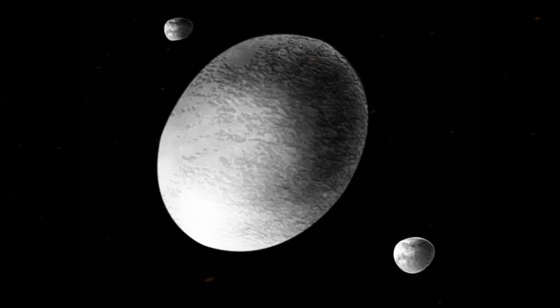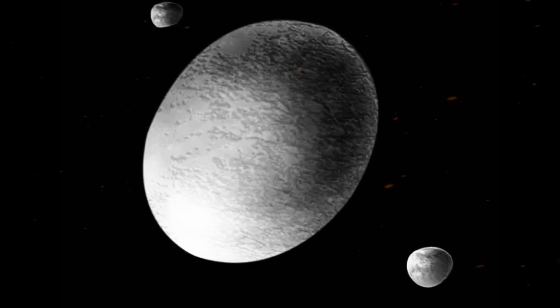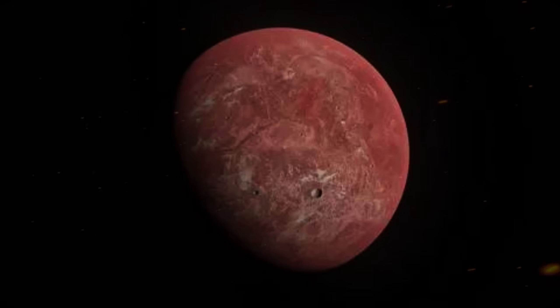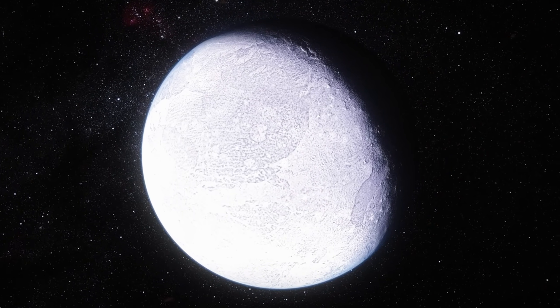In addition to Pluto and its moons, the Kuiper Belt contains other dwarf planets like Haumea, Makemake, and Eris, as well as countless smaller icy objects.